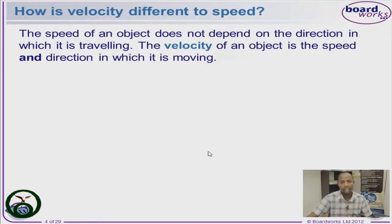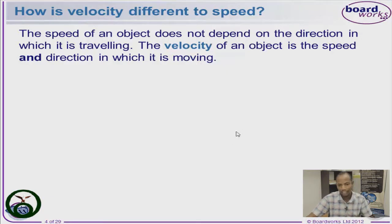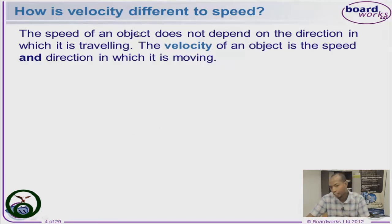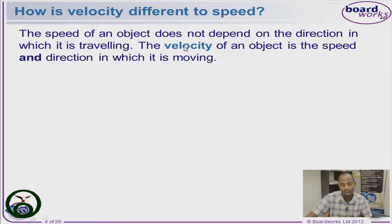Velocity is quite different from speed. Velocity looks at both the speed and the direction with which the object is moving. In the case of speed, we're only looking at the magnitude — the size — and not the direction. Velocity is a vector quantity, meaning we consider both the magnitude and the direction, whereas speed only considers the magnitude.